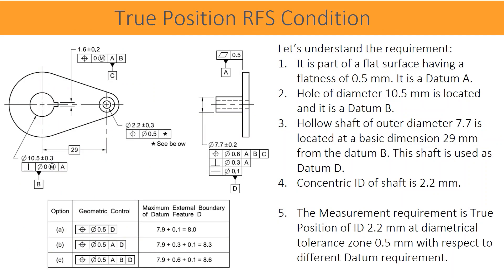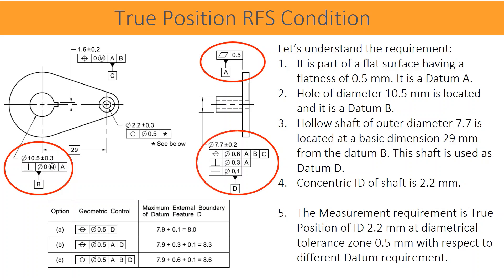True position RFS condition — this is a no-boundary condition. Let's understand the requirement given in the drawing. It is a part with a flat surface having a flatness of 0.5 millimeters; it is datum A. A hole of diameter 10.5 millimeters is located and it is datum B. A hollow shaft of outer diameter 7.7 is located at a basic dimension of 29 millimeters from datum B.